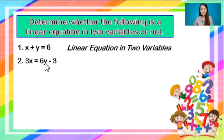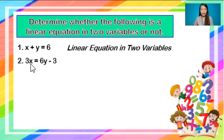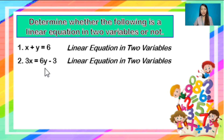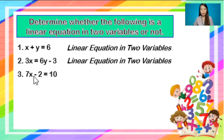Number 2: 3x equals 6y minus 3. This equation has two variables. There is only one variable for each term. The exponent of the variable in each term is 1. There is no variable in the denominator or inside the radical sign. Therefore, this is a linear equation in two variables. Number 3: 7x minus 2 equals 10. Since we only have one variable, which is x, therefore this is not a linear equation in two variables.